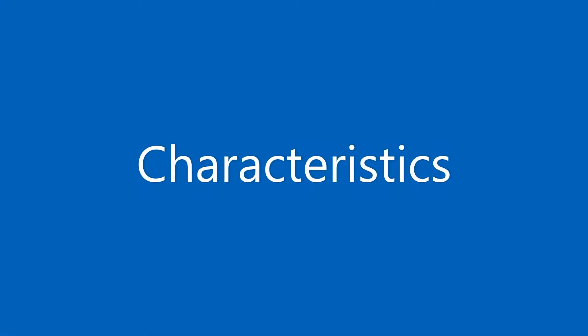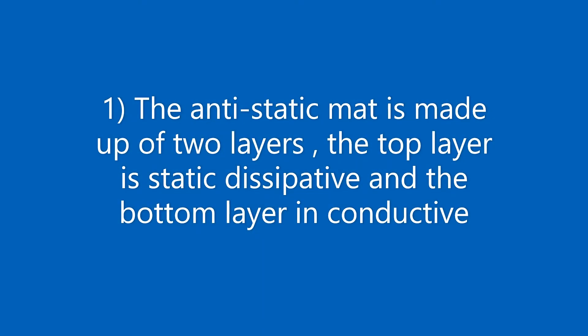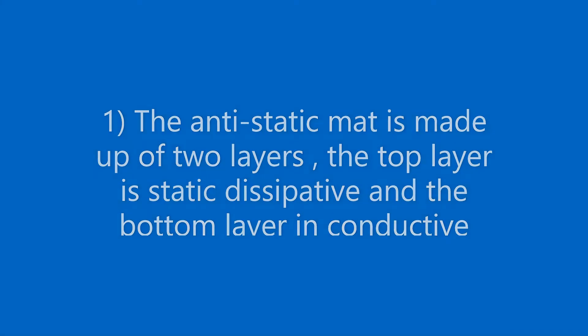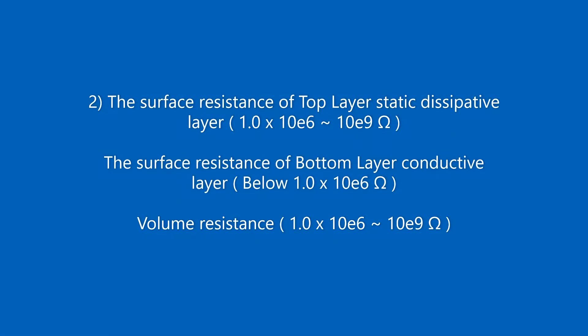ESD table mat characteristics: 1. The anti-static mat is made up of two layers — the top layer is static dissipative and the bottom layer is conductive. 2. The surface resistance of the static dissipative layer is 10^6 to 10^9 ohms. The surface resistance of the conductive layer is below 10^6 ohms. Volume resistance is 10^6 to 10^9 ohms.